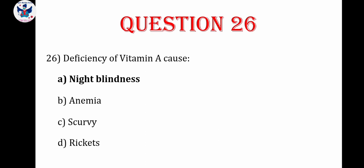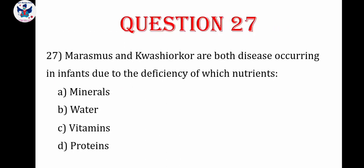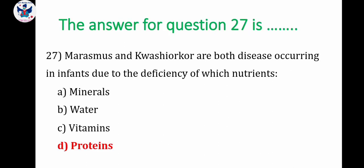Question number 26: deficiency of vitamin A causes — A. Night blindness, B. Anemia, C. Scurvy, D. Rickets. The correct answer is night blindness. Question number 27: marasmus and kwashiorkor are both diseases occurring in infants due to deficiency of which nutrient — minerals, water, vitamins, or proteins. The correct answer is protein.